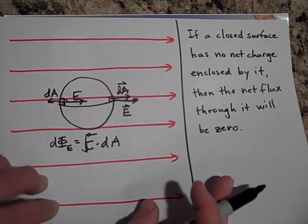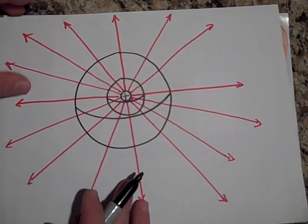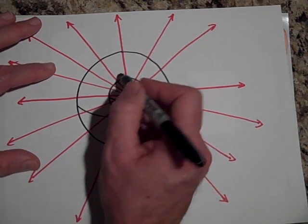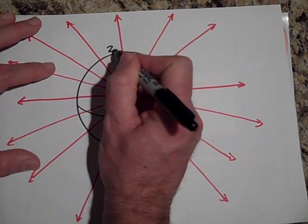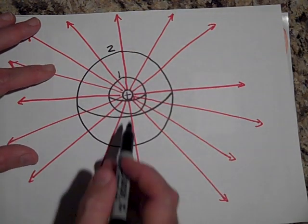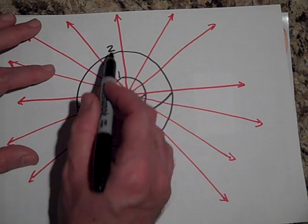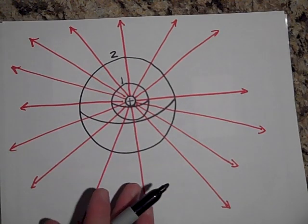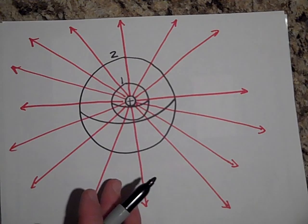One other thing about flux is that if we do have a positive charge in here, and I have two spheres, one and two, and sphere one is much smaller than sphere two, but both of them enclose the charge. I'd like you to see something.